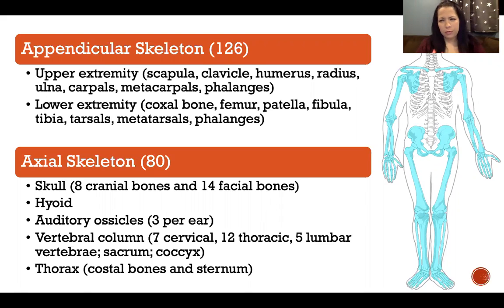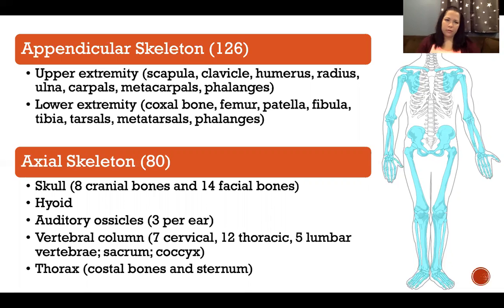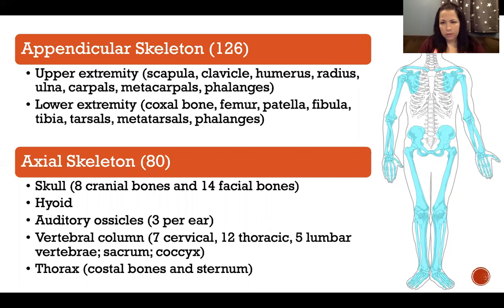Something that people usually get mixed up about is whether the shoulder and hip girdles are appendicular or axial, so I want to make sure that's crystal clear. By shoulder girdle, I'm referring to the scapula and clavicle, and by hip girdle, I'm talking about the pelvis — those are all considered part of the appendages. The pelvis is considered part of the lower extremity, therefore it's appendicular. The scapula and clavicle are considered part of the upper extremities, therefore they're appendicular.